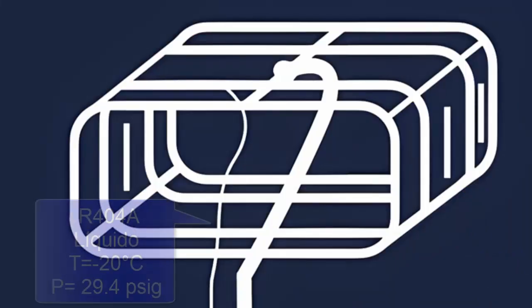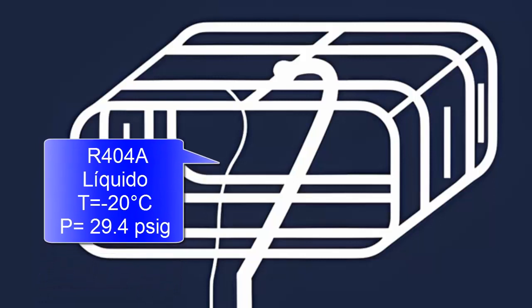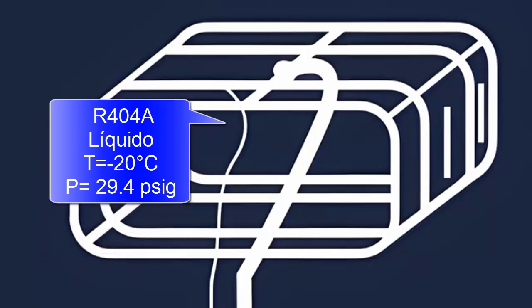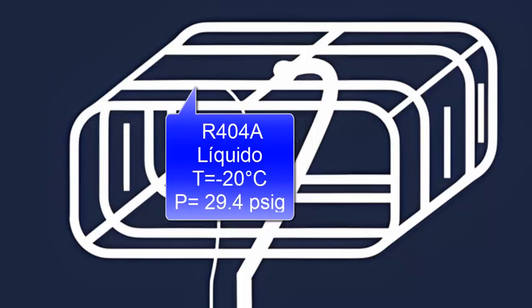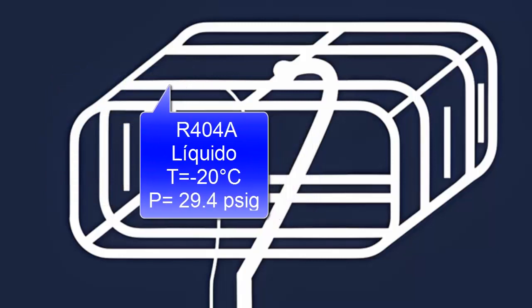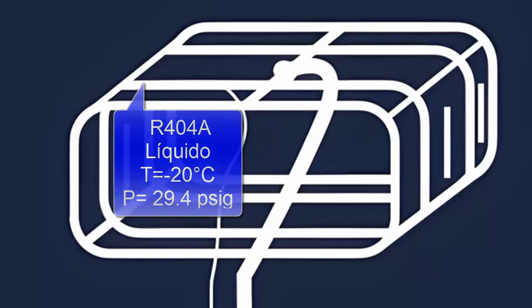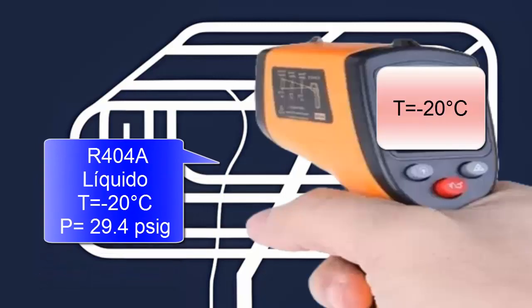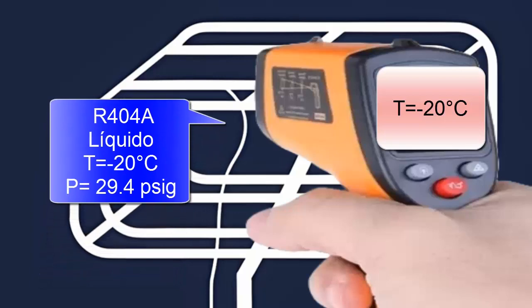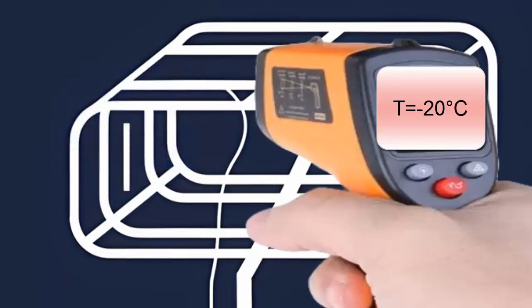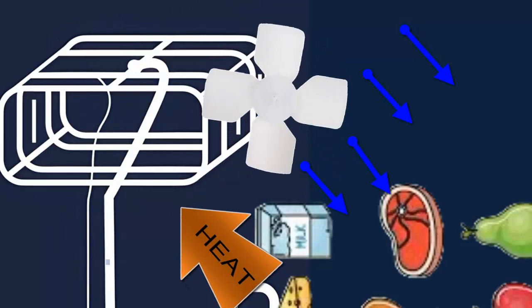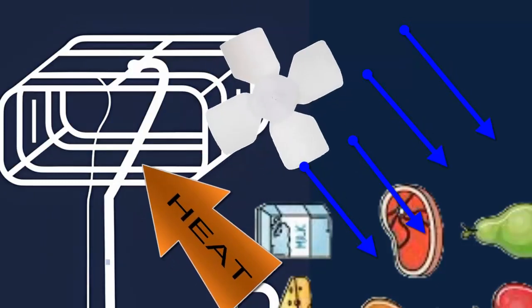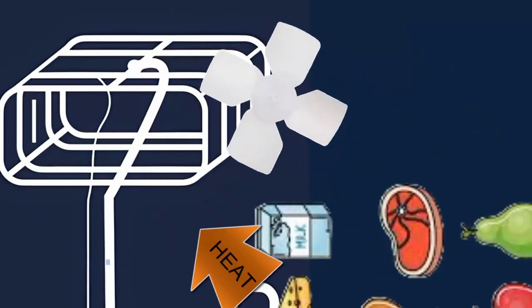The R404A refrigerant enters the evaporator in a liquid state, at a pressure of 29.4 pounds per square inch. With this pressure, it is achieved that the R404A in the evaporator has a temperature of minus 20 degrees Celsius. With this low temperature and the help of the fan, the heat from the food quickly passes to the refrigerant R404A, causing it to evaporate.